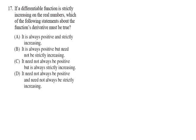With problem number 17, it says if a differentiable function is strictly increasing on the real numbers. So the first thing you have to be able to do is interpret what this means — a differentiable function. To me, the easiest word to describe a differentiable function is that it is a smooth curve.